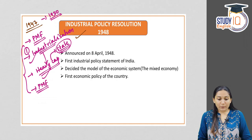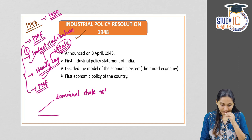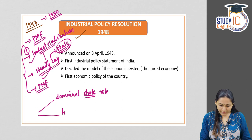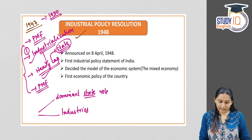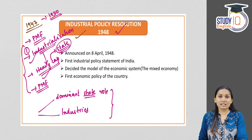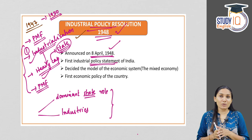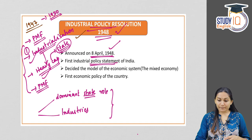So the background with which India adopted industrial policies can be summarized as: dominant state role, and the industrial or secondary sector as the prime moving force of the economy. The most important first industrial policy was the Industrial Policy Resolution of 1948 — the first major industrial policy statement of the Government of India, announced on 8th of April 1948, very soon after independence.